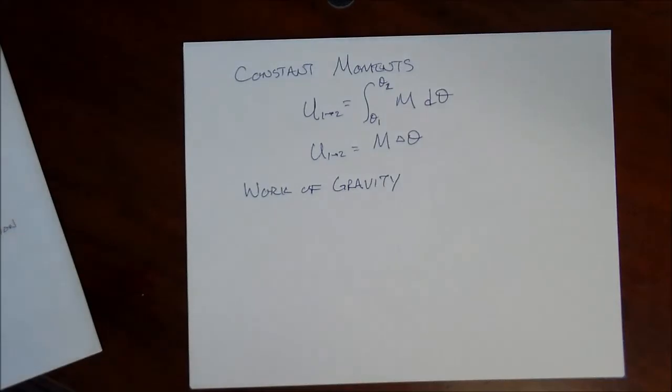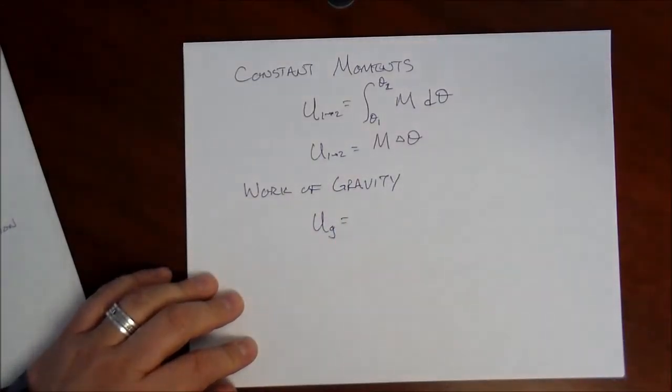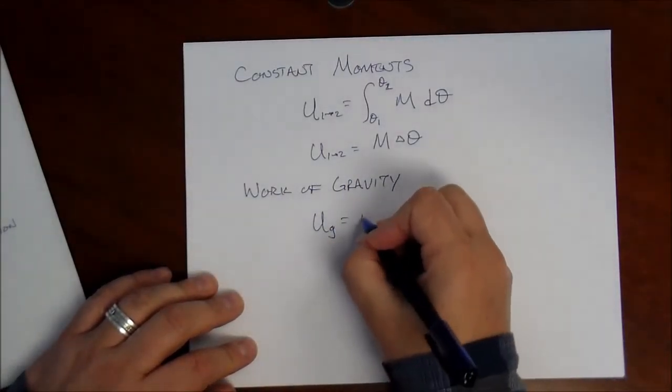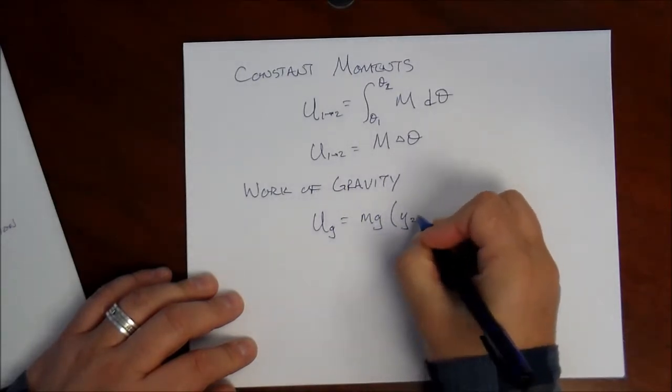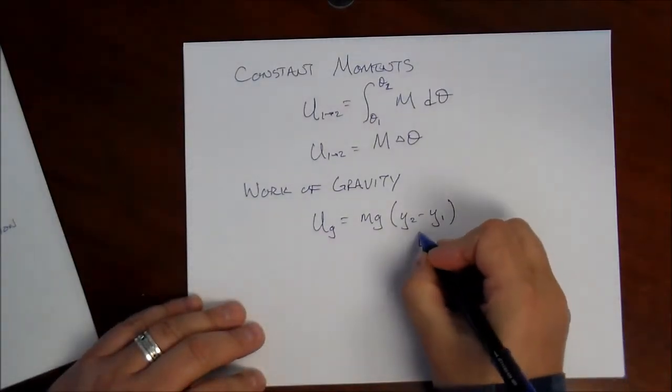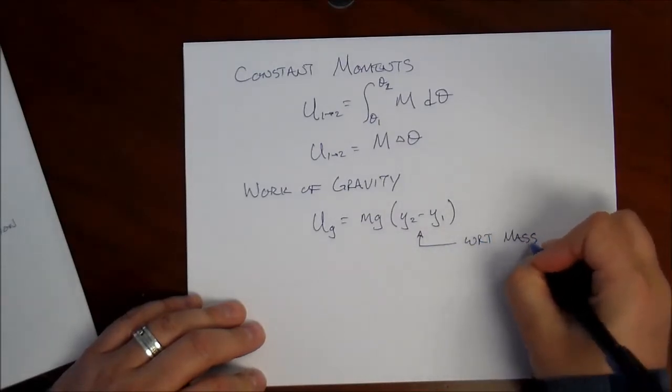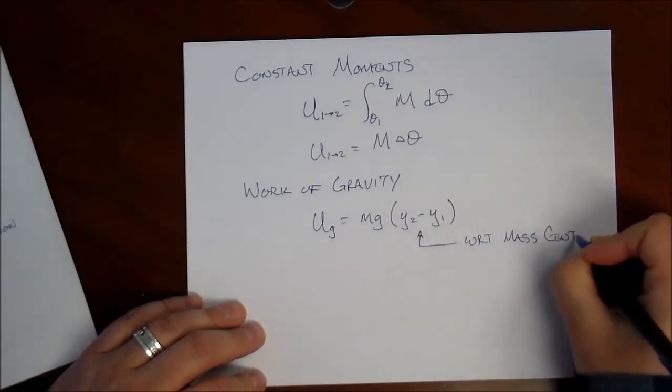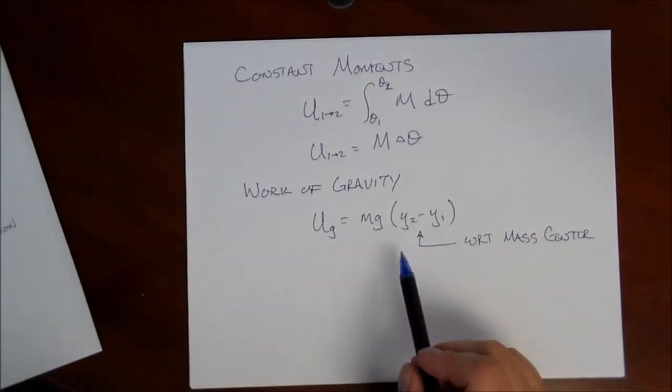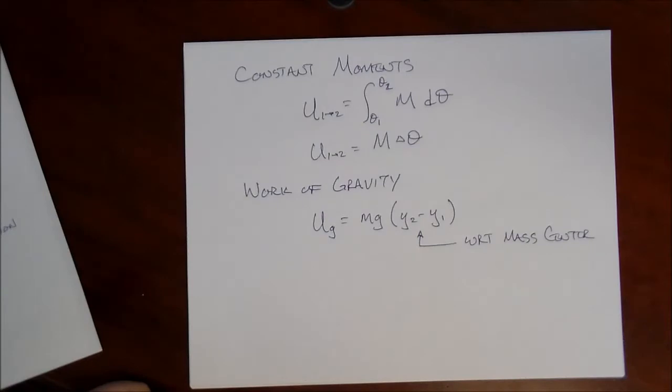We'll see the work due to gravity acting on a rigid body a lot in this section. Still, the statement for work done by gravity is the same as it was for a particle. That is, it's the weight m times g times y2 minus y1. But in this case, it's very important to recognize that the coordinate y is written with respect to the mass center. So, we're concerned with the elevation change of the center of mass of the rigid body, not necessarily any other point on the rigid body.